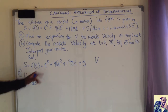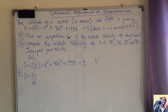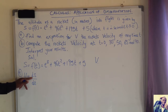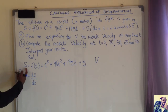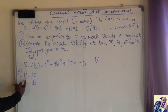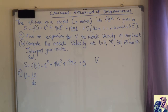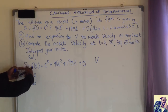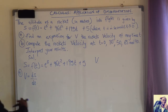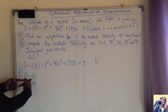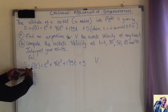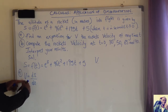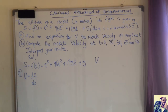We need to differentiate displacement with respect to time to get the function for velocity. Differentiating displacement gives velocity; differentiating velocity gives acceleration. Conversely, if you integrate velocity you get displacement, and if you integrate acceleration you get velocity. So to find velocity, I differentiate displacement with respect to time because, by definition, velocity is the rate of change of displacement with respect to time.